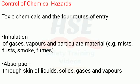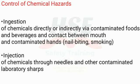Control of chemical hazards: toxic chemicals and the four routes of entry. Inhalation of gases, vapors, and particulate material — for example, mists, dusts, smoke, and fumes. Absorption through skin of liquids, solids, gases, and vapors. Ingestion of chemicals directly or indirectly via contaminated foods and beverages.